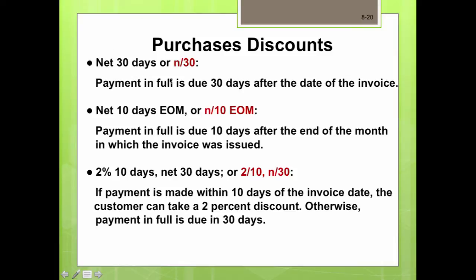Usually you have net 30 days, shown as N/30 on the invoice, meaning payment is due in full within 30 days of the invoice date. If it says 2/10 net 30, that means if payment is made within 10 days of the invoice date, the customer can take a 2% discount. If not, payment is due in full within 30 days.